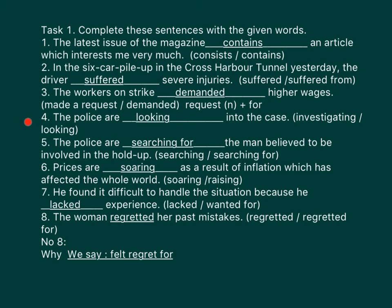Number four: The police are looking into the case. Number five: The police are searching for the man believed to be involved in the hold-up. Number six: Prices are soaring as a result of inflation, which has affected the whole world. Number seven: He found it difficult to handle the situation because he lacked experience. Number eight: The woman regretted her past mistakes. We say it this way because if you want to pair 'regret' with 'for,' we say 'felt regret for' — in that instance, 'regret' is a noun.